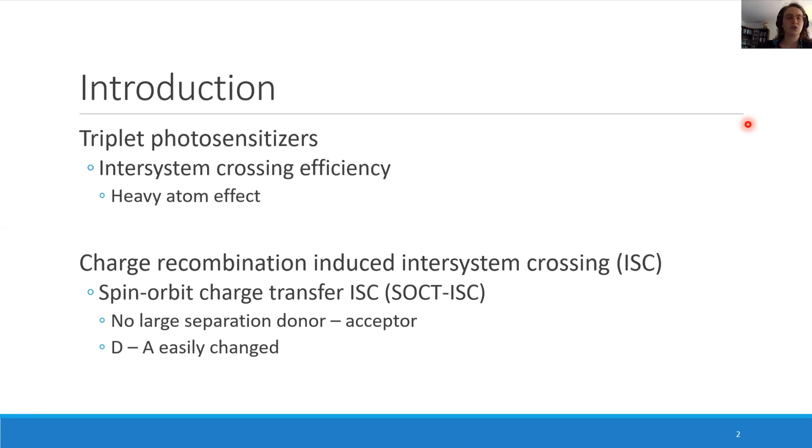Triplet photosensitizers are crucial in a lot of different applications. For a good photosensitizer, a good yield of intersystem crossing is important to produce efficient triplet states.